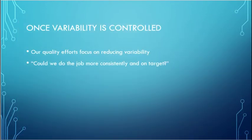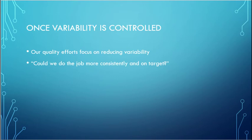Once we have our process in control — meaning our variability is predictable — we can measure the process before and after changes and do a statistical analysis to see the impact of those changes. This means we can start asking: can we change the process in ways that will reduce the variability? Can we do the job more consistently and still be on target? We'll be able to use statistical analysis to check whether changes to the process are actually improvements or not.